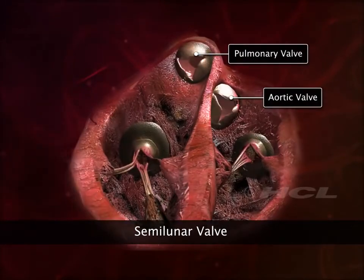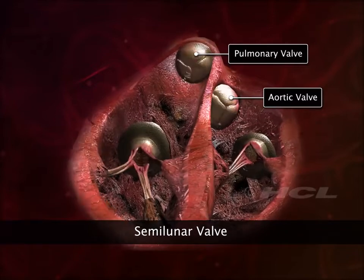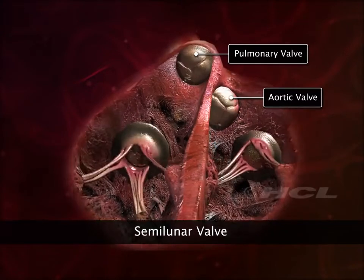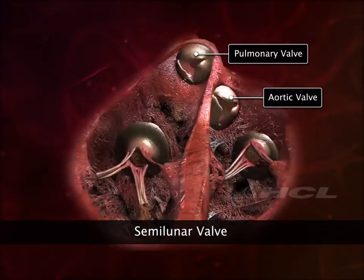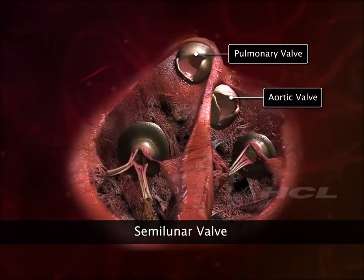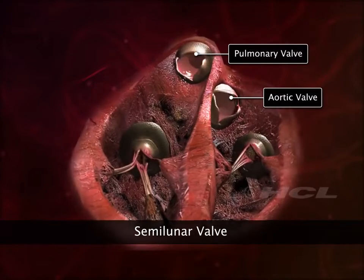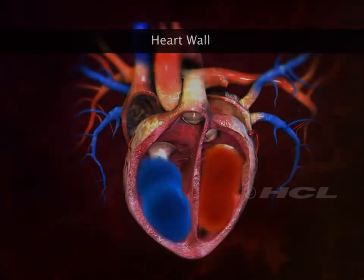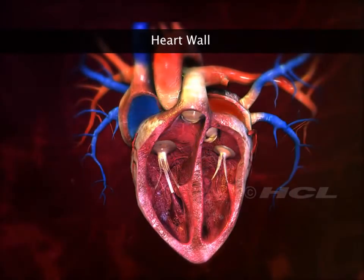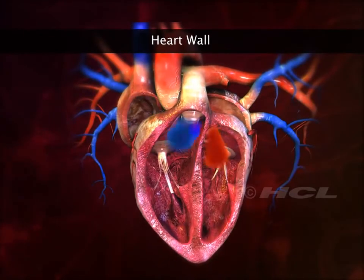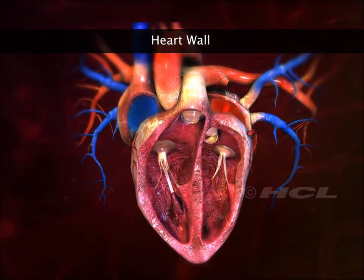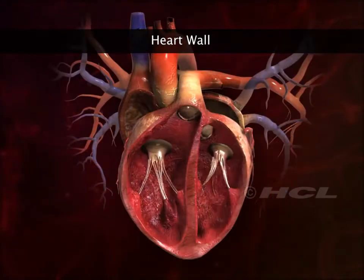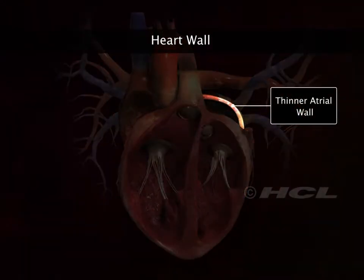The characteristic lub-dub sound of the heartbeat is produced during the closing of the heart valves. The thickness of the walls of the four heart chambers varies with their functions. The walls of the atria are thinner than those of the ventricles.